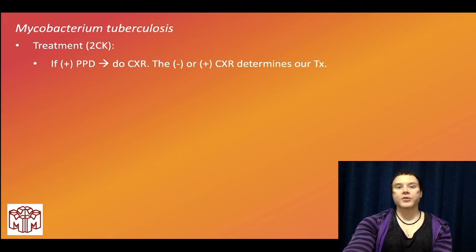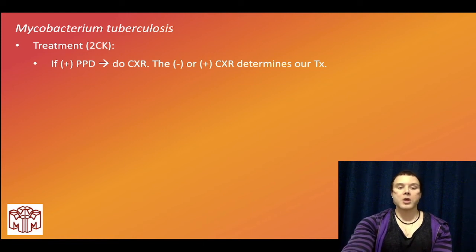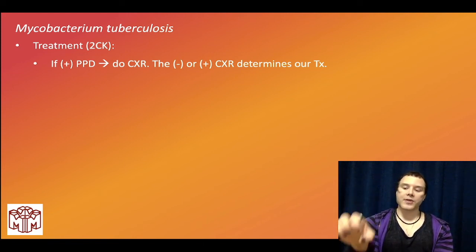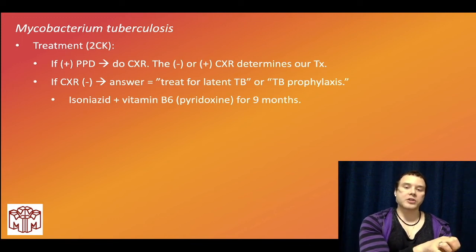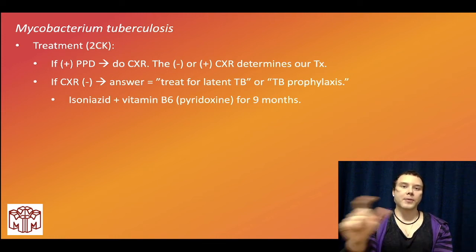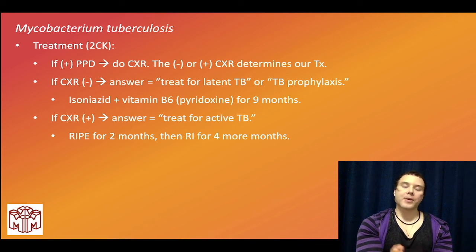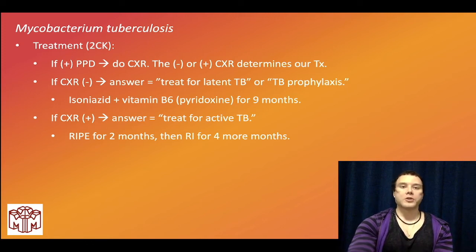For management: PPD test first. If positive, do chest X-ray. Positive PPD with negative chest X-ray — treat for latent TB (TB prophylaxis), which is isoniazid for nine months plus vitamin B6, because INH can cause B6 deficiency. Positive PPD with positive chest X-ray — treat for active TB: RIPE for two months (rifampin, isoniazid, pyrazinamide, ethambutol), then rifampin and isoniazid alone for four more months.